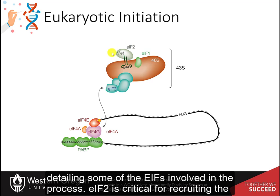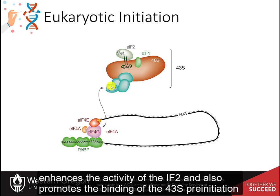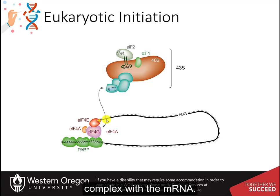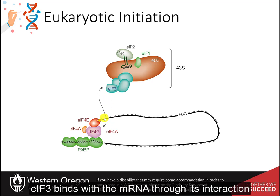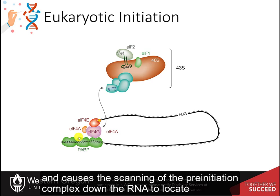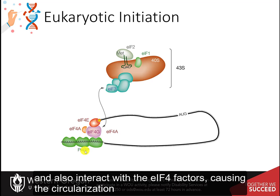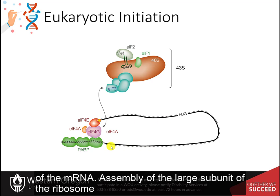EIF2 is critical for recruiting the initiator tRNA to the 40S subunit. EIF3 enhances the activity of EIF2 and also promotes the binding of the 43S pre-initiation complex with the messenger RNA. EIF3 binds with the messenger RNA through its interaction with the EIF4 cofactors and causes the scanning of the pre-initiation complex down the RNA to locate the AUG start site. PolyA binding proteins bind with the polyA tail sequence of the messenger RNA and also interact with the EIF4 factors, causing the circularization of the messenger RNA. Assembly of the large subunit of the ribosome will then ensue.